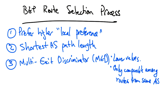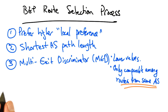Because the neighboring AS sets the MED value on routes that it advertises to a neighbor, MED values are not inherently comparable across routes advertised from different ASs. Therefore, this step only applies to routes advertised from the same AS.